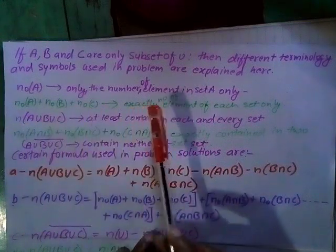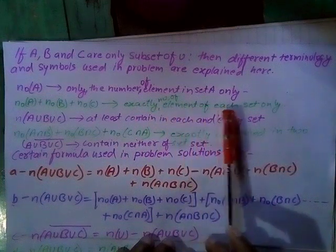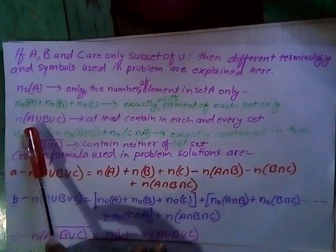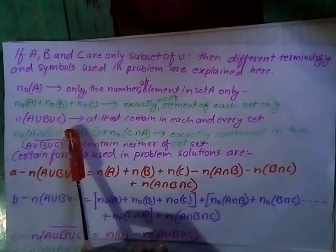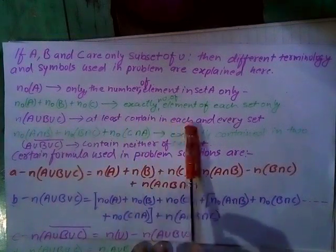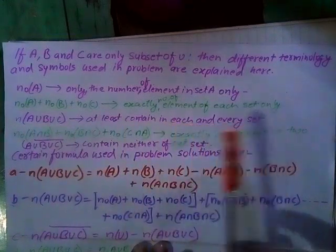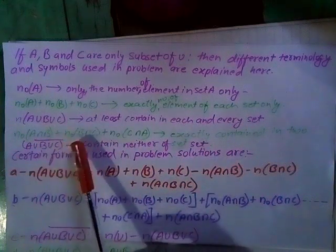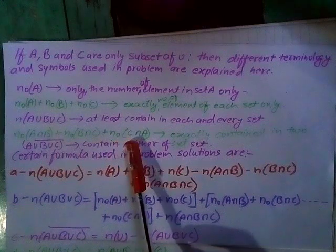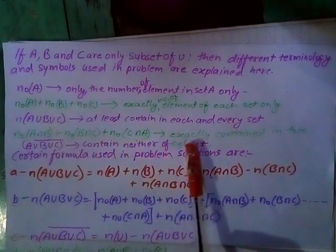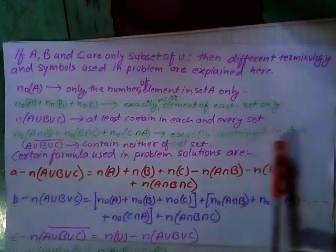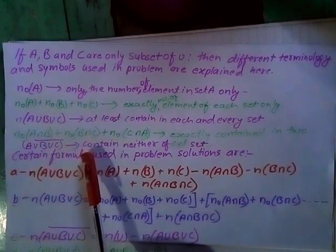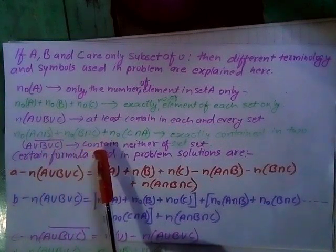N not A plus N not B plus N not C gives exactly the number of elements of each set only. N A union B union C means at least contained in each and every set. N not A intersection B plus N not B intersection C plus N not C intersection A gives exactly the elements contained in exactly two sets.